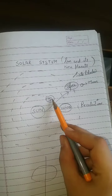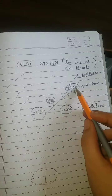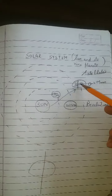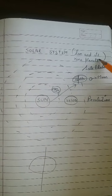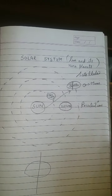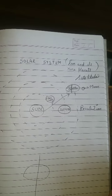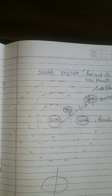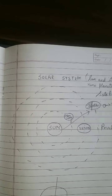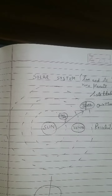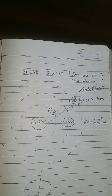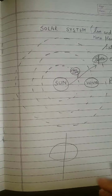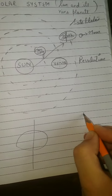इस picture में सिर्फ तीन ही planets draw की हैं क्योंकि space कम था, लेकिन यहाँ पर कितने planets हैं? Nine planets। लेकिन हम आज इस chapter में सिर्फ एक ही planet के बारे में पढ़ेंगे, क्योंकि Earth special है — क्योंकि Earth पर ही life possible है, Earth पर ही animals और plants मिलते हैं, और किसी planet पर life possible नहीं है। तो अगला concept है — that is rotation.